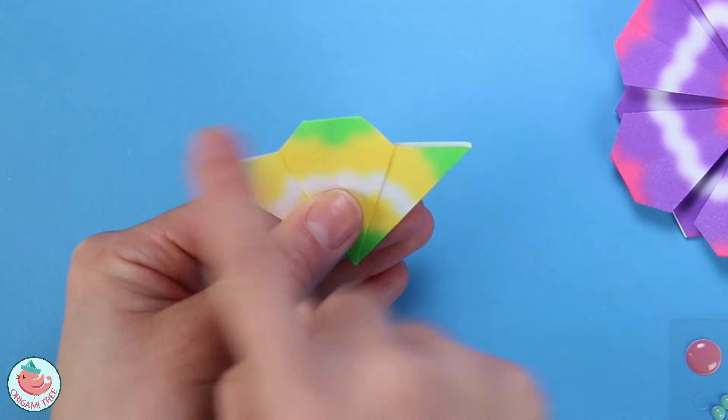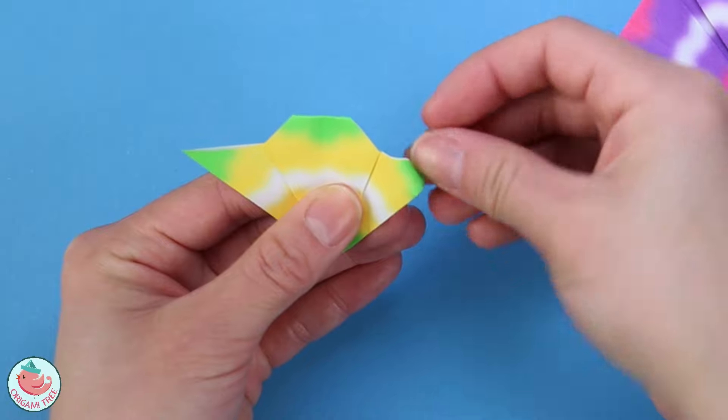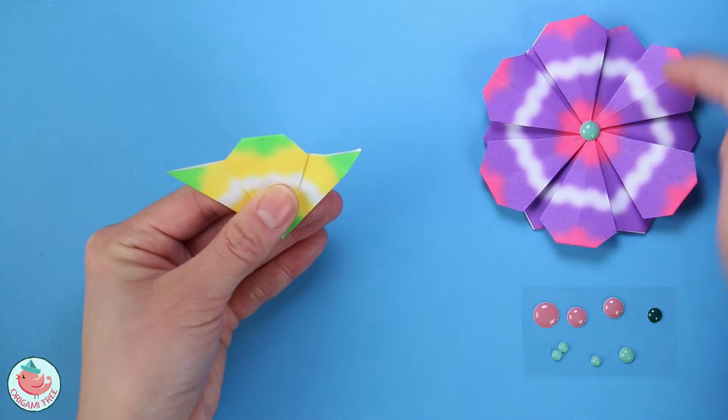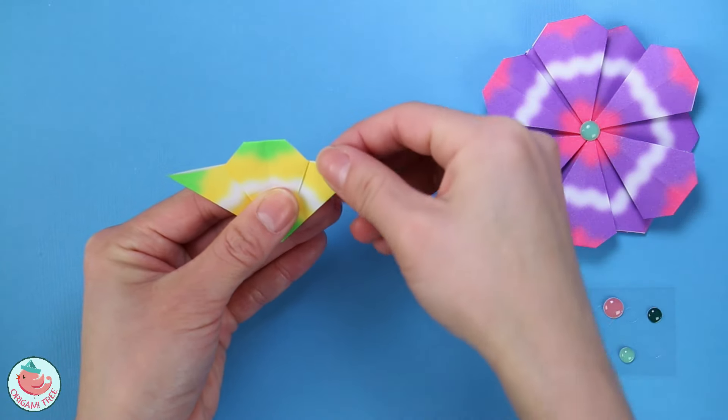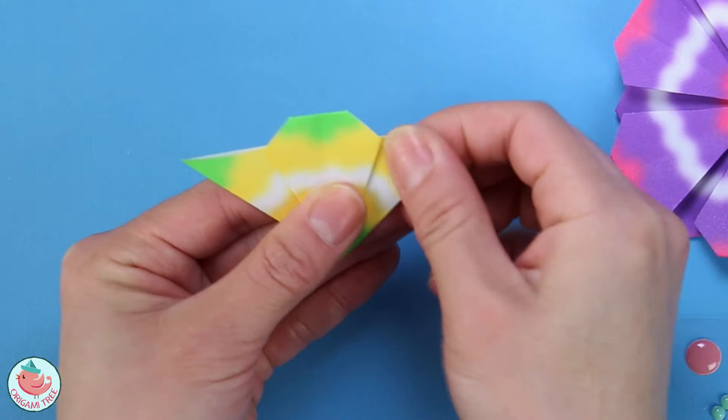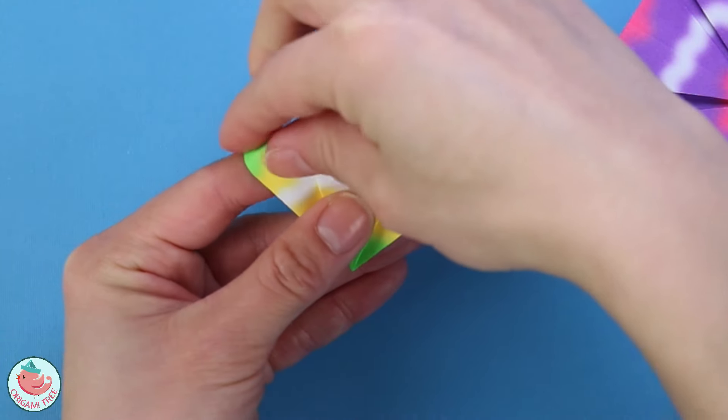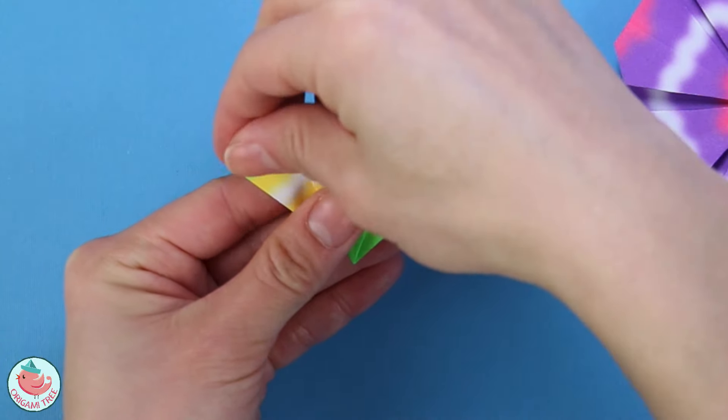And now we want to fold these two corners down as much or as little as you want. So you can imagine this being this part of the flower right here. So I'm going to fold it just a little bit on the right and also a little bit on the left.